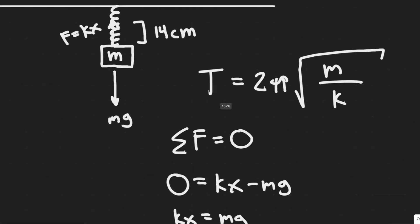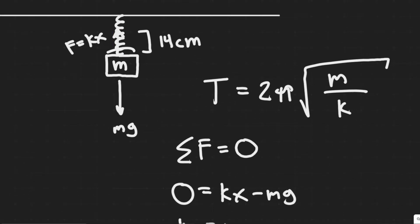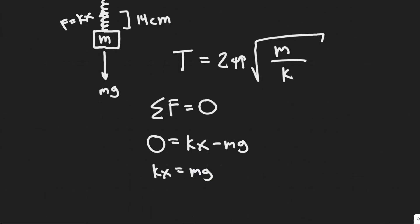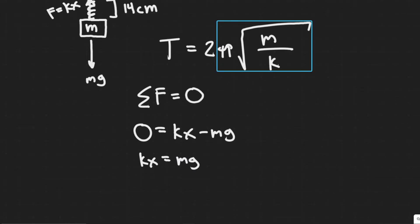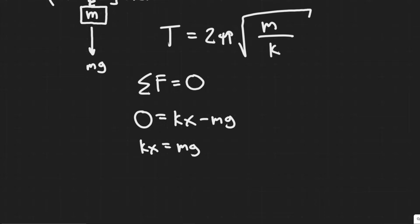And then move mg to the other side, you'll get that kx is equal to mg. And so this should be pretty intuitive, since if this thing stopped, these two forces have to equal each other, or else it would keep moving. So basically kx is equal to mg. And we need k in order to solve this.